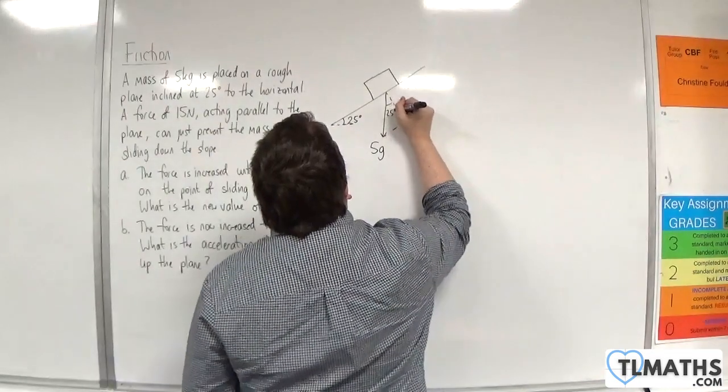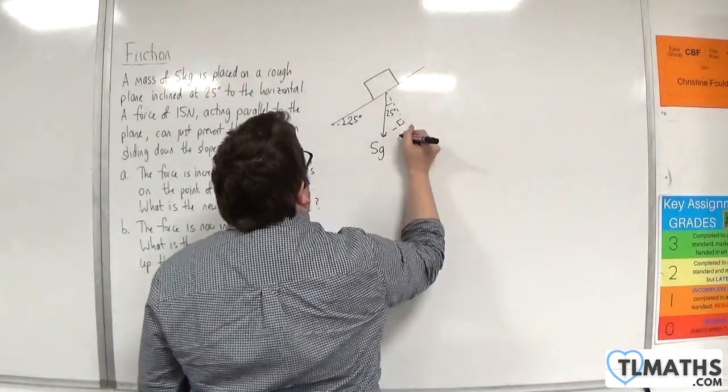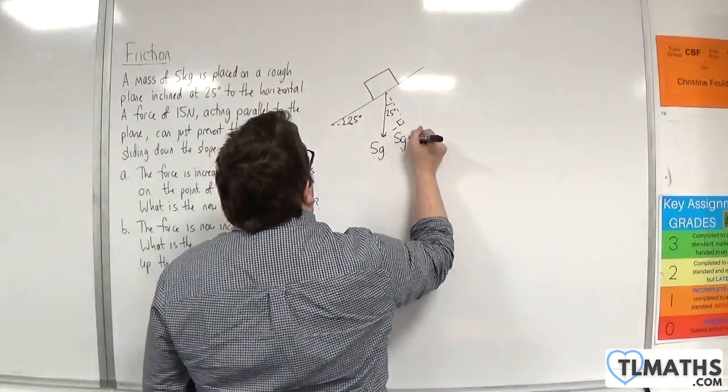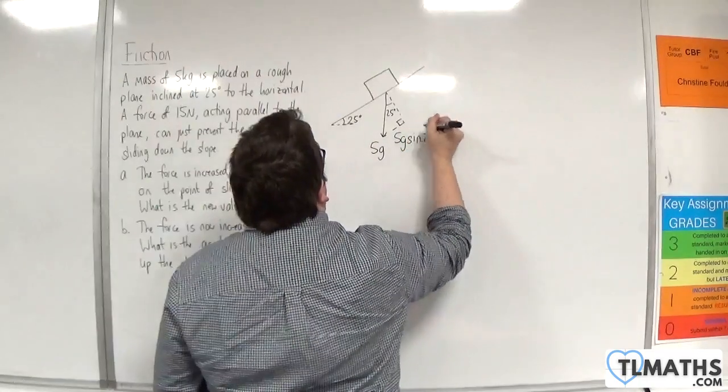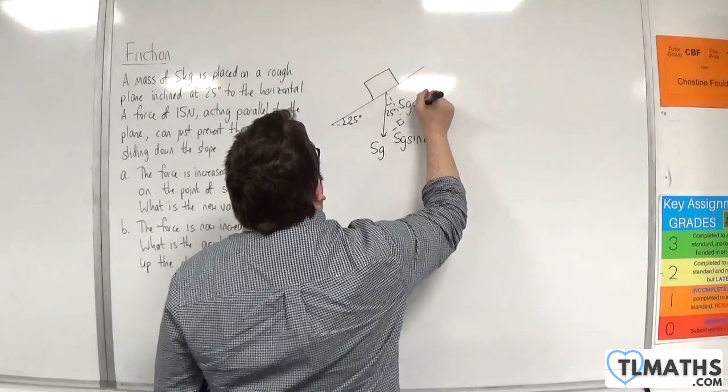We'll complete the triangle. So that angle's 25 degrees. That's a right angle. This is 5g sin of 25 degrees, and this is 5g cos of 25 degrees.